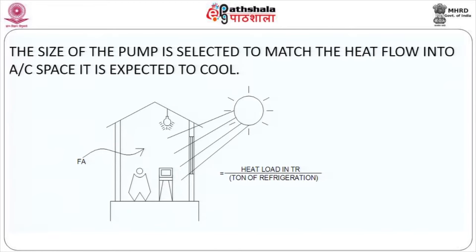The AC space is characterized as an enclosure — a room where you have internal loads and external loads coming in. The internal load could be any equipment, people, and lights. Likewise, the external heat loads could be solar radiation, the actual temperature difference between outside and inside, and of course the fresh air that you would normally take for such an application.